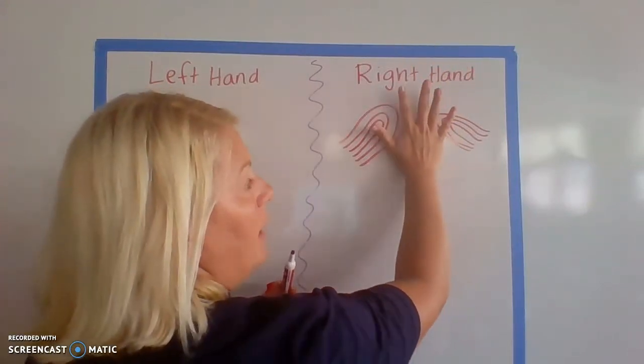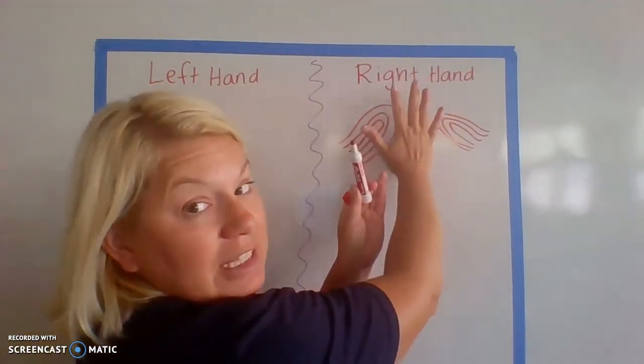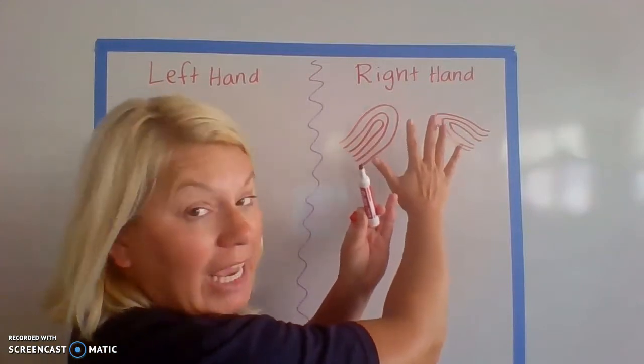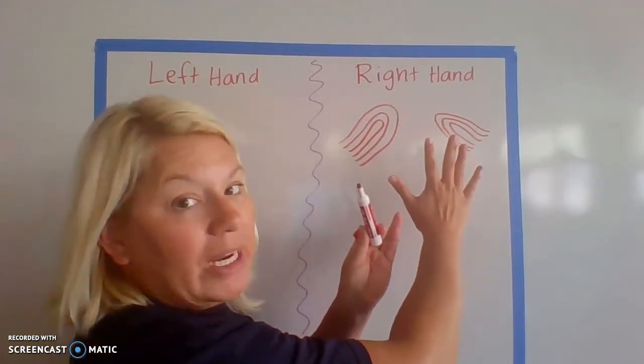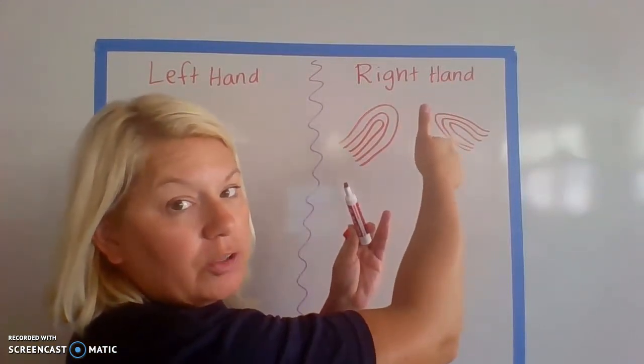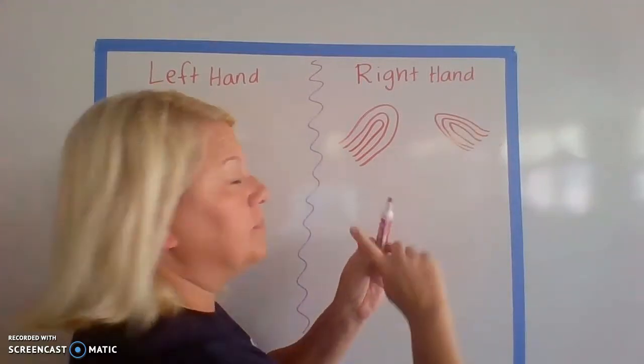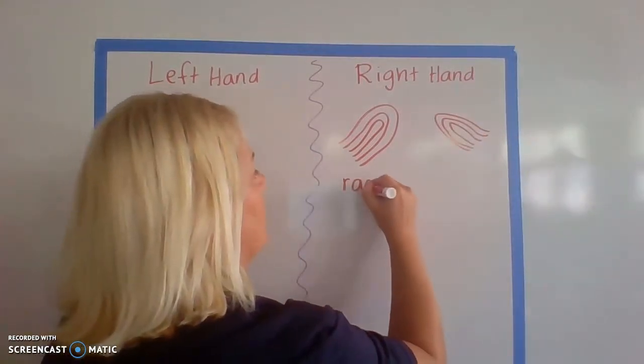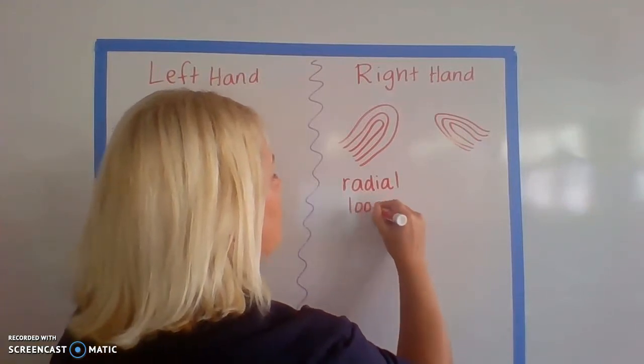Okay, so it's my right hand. It's entering and exiting the same side, same side of my arm that the radius is on. Remember, radius is on your thumb to rotate. So that becomes a radial loop.